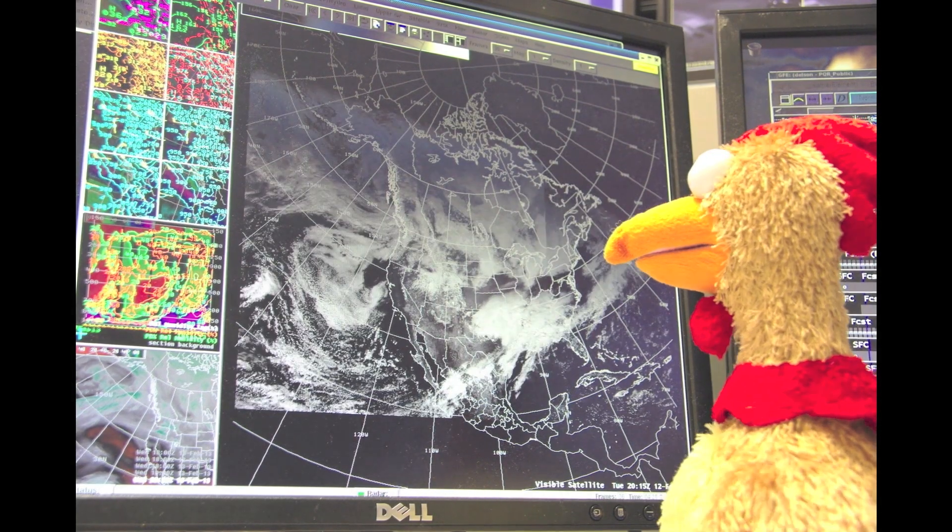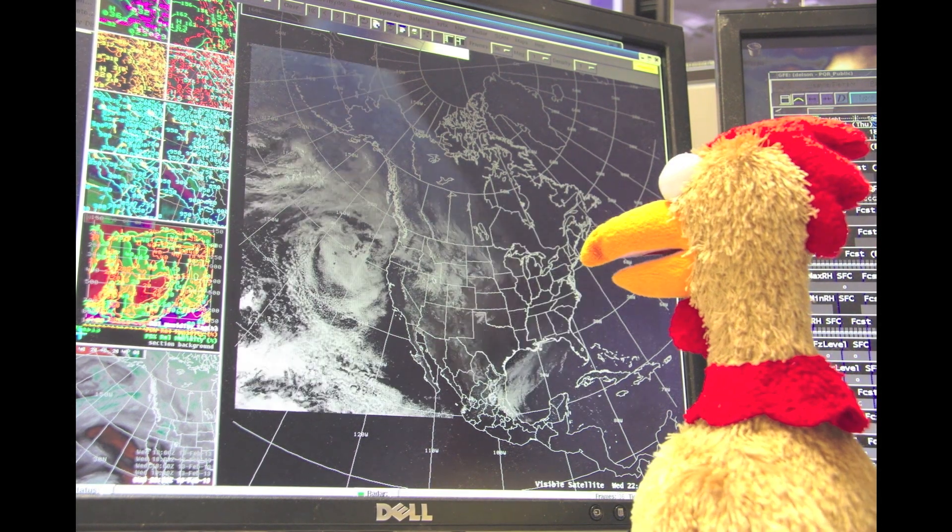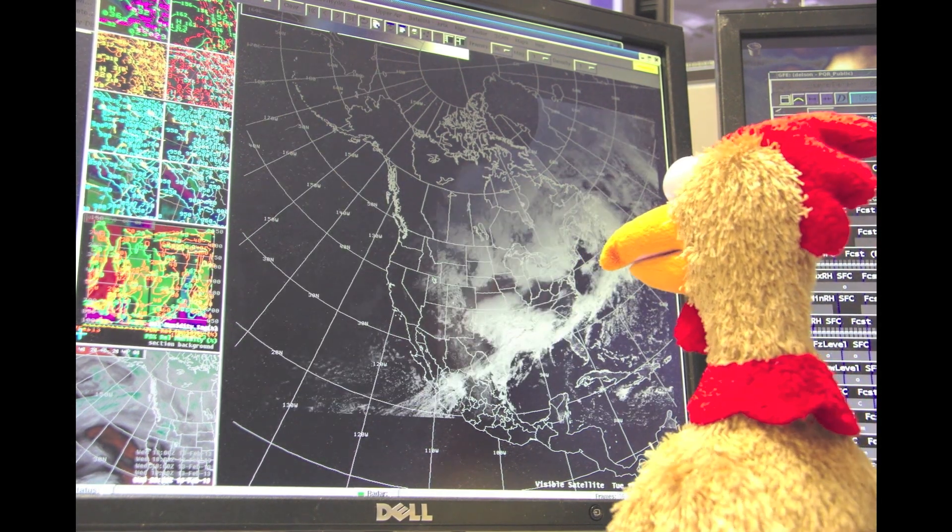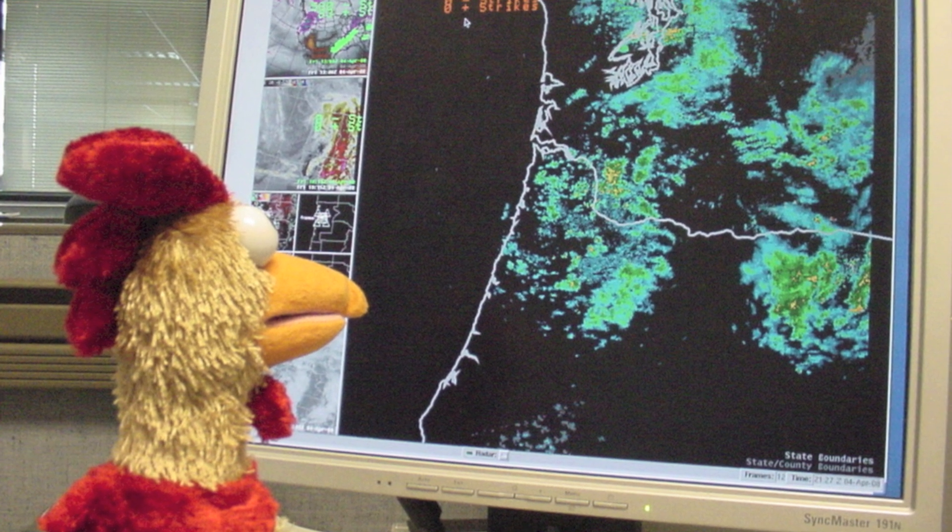When he is forecasting, Larry spends a lot of time looking at a computer. Satellite pictures help Larry see where the clouds and moisture are. Radar pictures help him to see where it is raining and snowing.